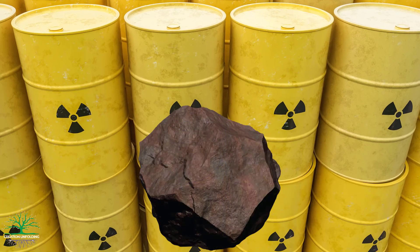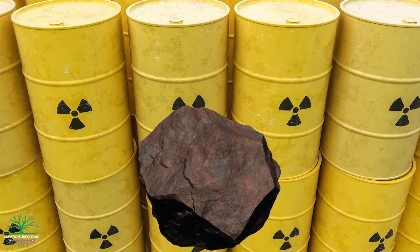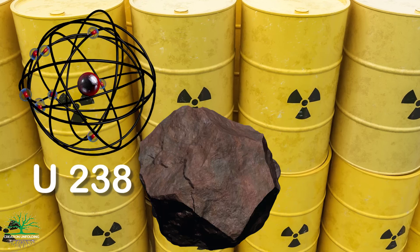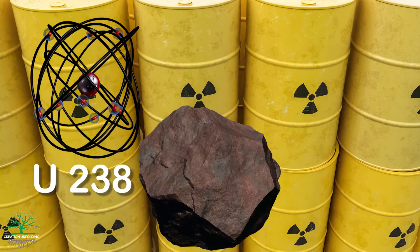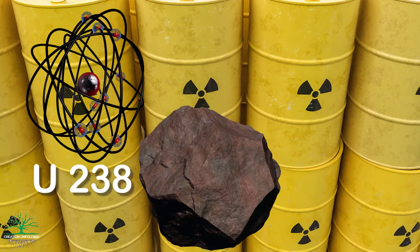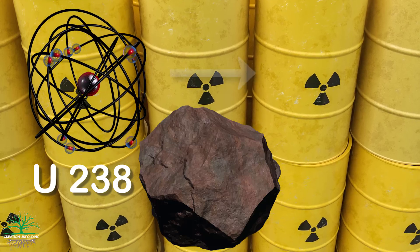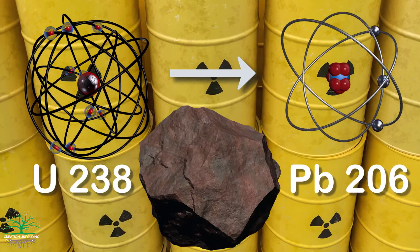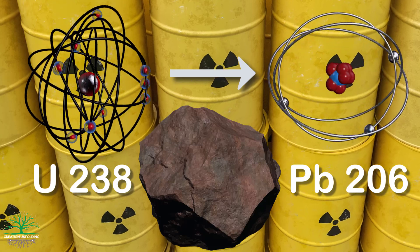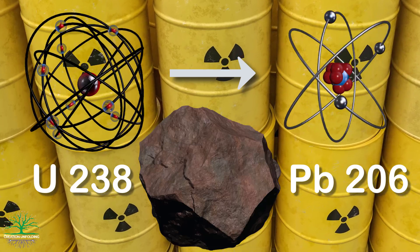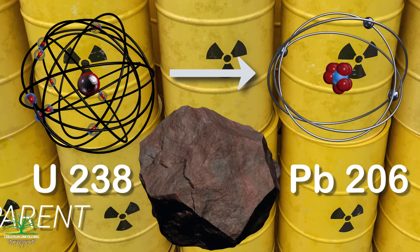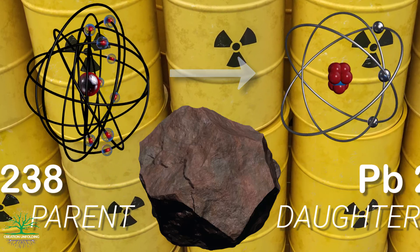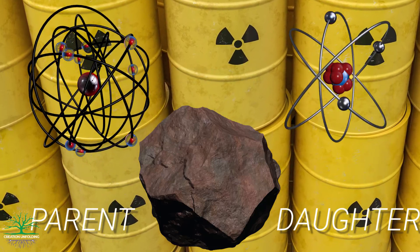Imagine that when this rock formed, it contained 10 atoms of uranium-238. Since uranium-238 is a radioisotope, it eventually breaks apart or decays away to become lead-206, a stable element. This is why we call uranium-238 the parent isotope and lead-206 the daughter isotope.